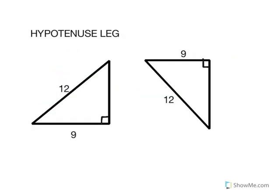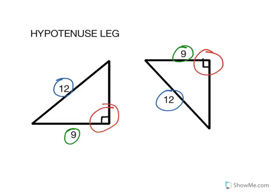Hypotenuse-leg only applies to right triangles. It shows congruence if two right triangles have the same length hypotenuse and the same length for one of the two legs. For example, the hypotenuse on these two triangles is 12, and one of the legs is 9, in the same position on each triangle. Since these triangles are right triangles and have the same hypotenuse and leg length, they are congruent by hypotenuse-leg.